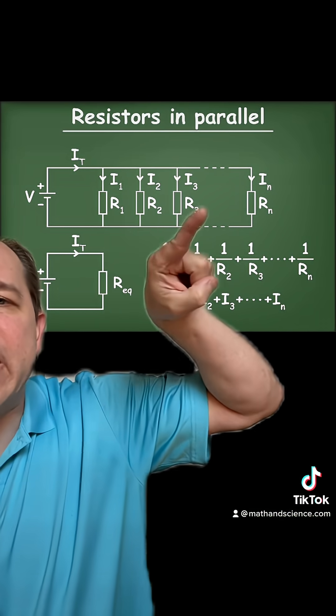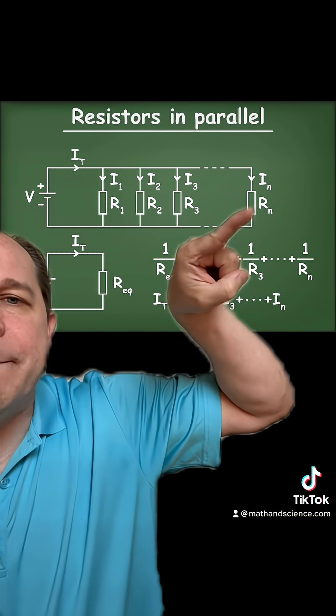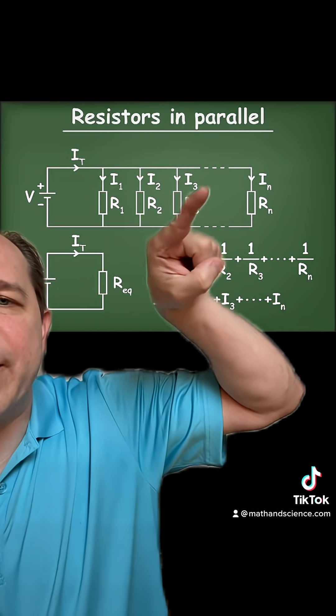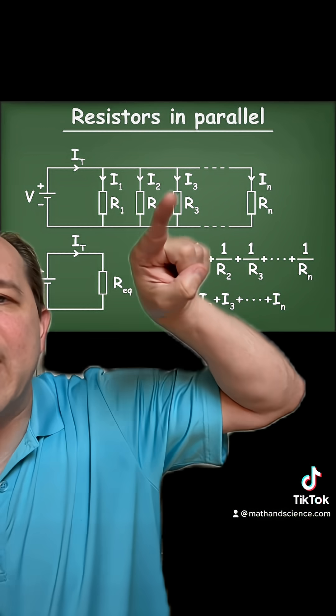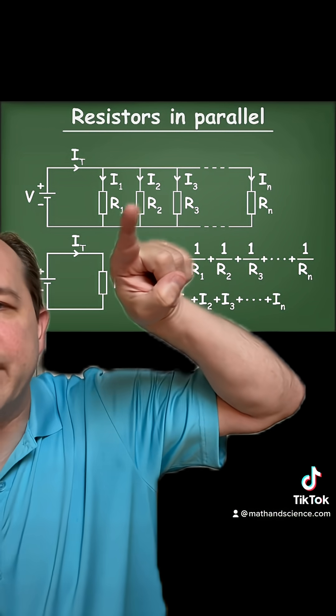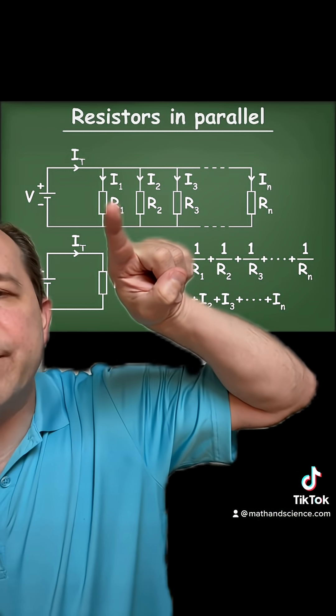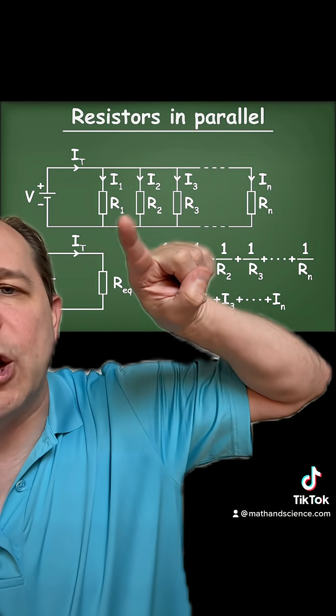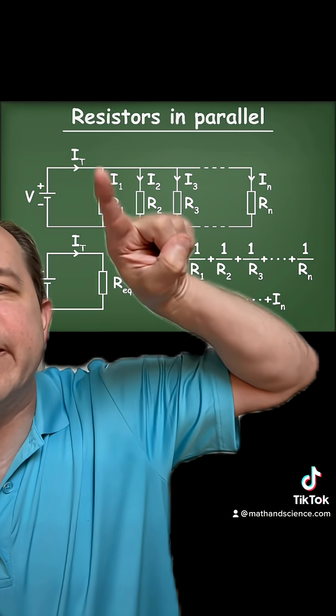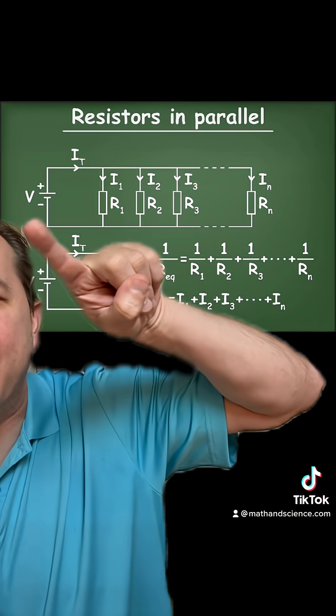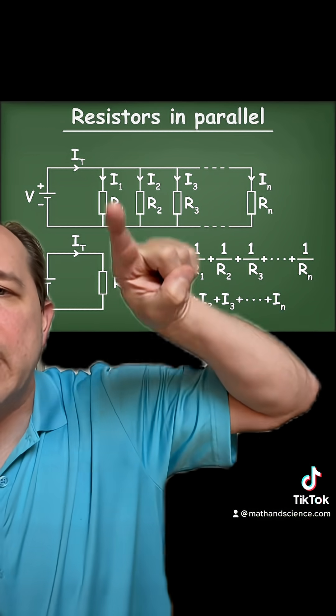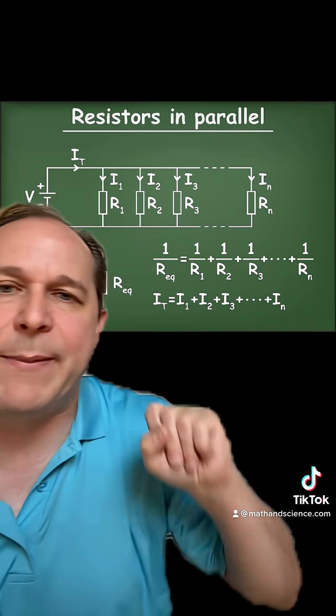Think about it: even if I make this element very high resistance, high resistance, high resistance, if the first element has a low resistance, there's still a path for current to go around back to the battery.